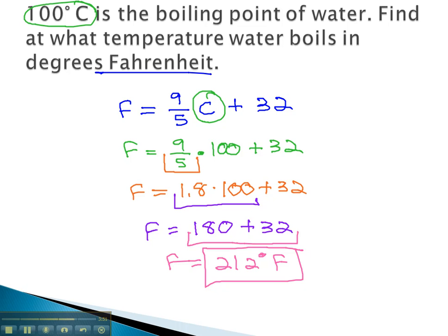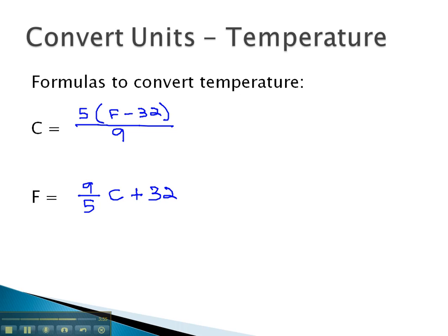So we can quickly make these conversions between Celsius and Fahrenheit by being sure we use the correct formula to convert. When we're looking for Celsius, we use the formula 5 times Fahrenheit minus 32 over 9. When we're looking for Fahrenheit, we use 9 fifths times Celsius plus 32. The important thing to remember is order of operations to simplify, doing parentheses first, multiplying and dividing, and then adding and subtracting.